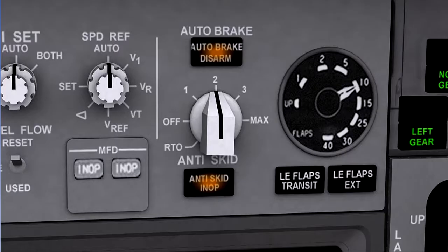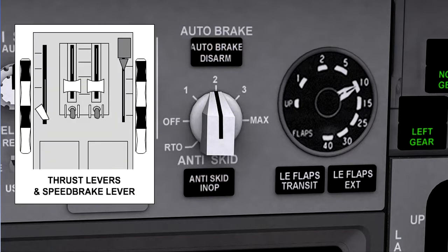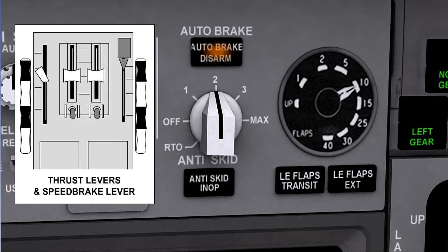As we have already seen, the autobrake system disarms immediately and the disarm light will illuminate, if an autobrake or normal anti-skid system fault occurs, or if manual braking is applied. During autobrake operation, disarming will also occur if after landing any thrust lever is advanced, or if after landing the speed brake lever is returned to the down detent after the speed brakes have been deployed.